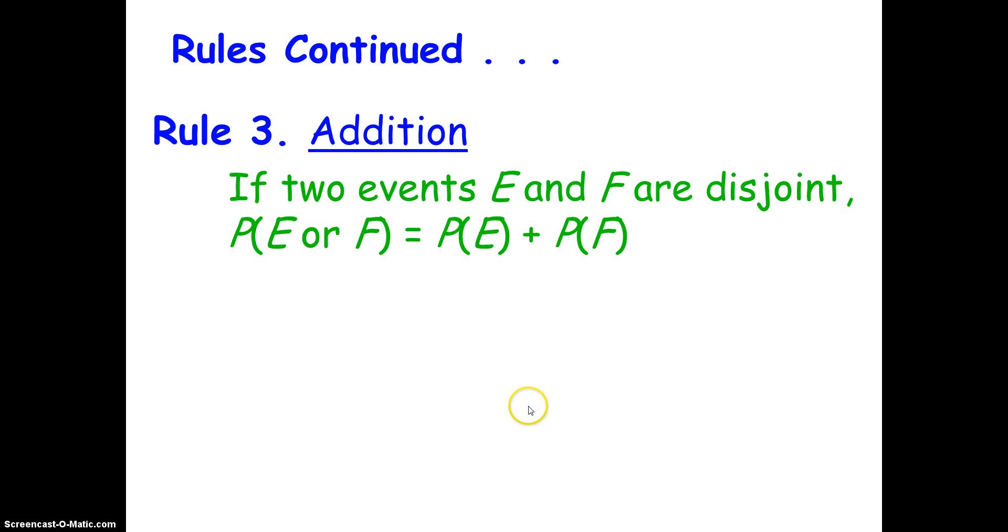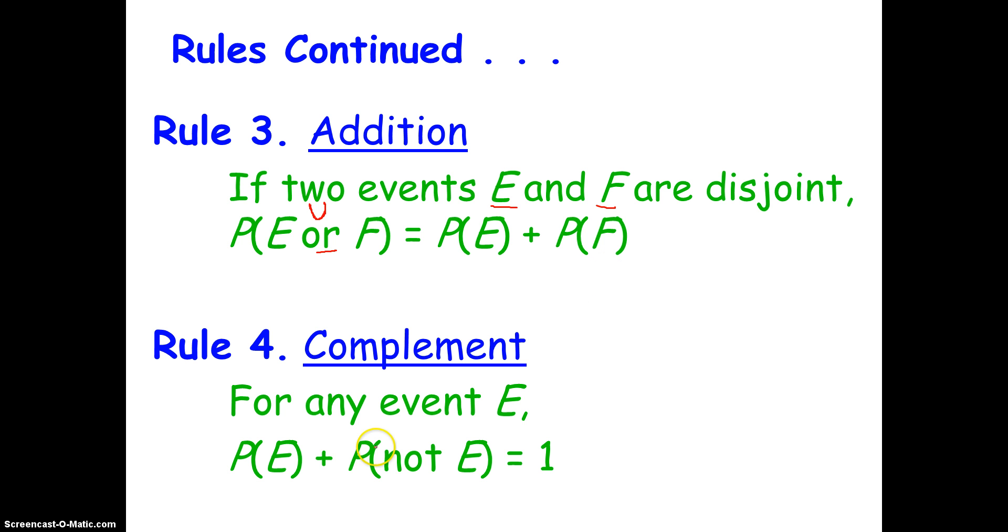Now, let's talk about when you can add probabilities of events together. If two events, E and F, are disjoint, the probability of E or F, so this would be a union of the two, right? E or F is equal to the probability of E plus the probability of F. And here's another rule, called the complement rule. For any event E, the probability of E occurring plus the probability of E not occurring has to be equal to 1.